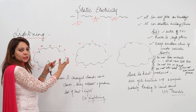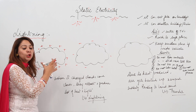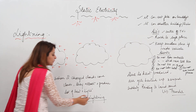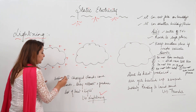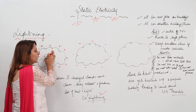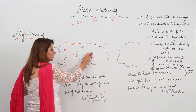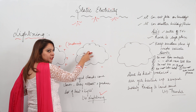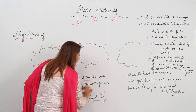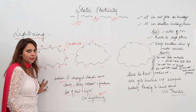Whenever oppositely charged clouds come closer to each other, they produce a lot of heat and light which leads to lightning. So, the charged cloud induces an opposite charge on the uncharged cloud, and when they come closer they attract and produce lot of heat and light — that is the cause of lightning.